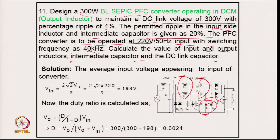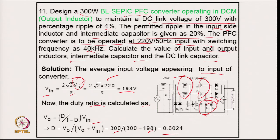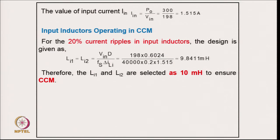The average input voltage is calculated as V_in = (√2 × V_s) / π = 198 V for 220 V RMS. With output voltage of 300 V and input of 198 V, the duty cycle comes to D = 0.624, confirming boost mode operation since it is above 0.5. The input average current is 300 / 198 = 1.515 A, and the input inductors operate in CCM.